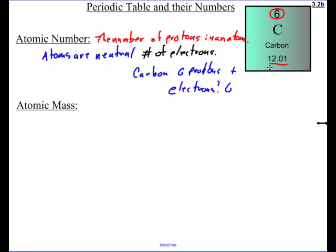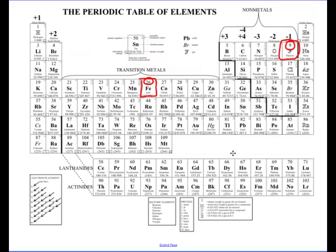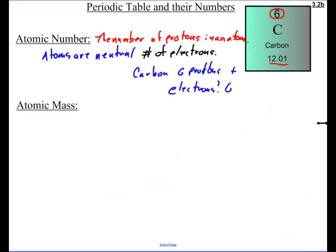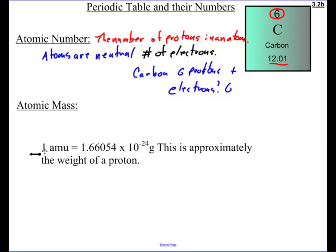Now we have this other number. Look at this. 12.01. And this number, just like all the other bottom numbers on the periodic tables, has a decimal in it. You'll find them all over the place. And what that number is, is the atomic mass. Well, let me write out what the atomic mass is.